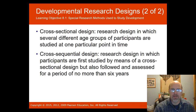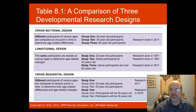Cross-sequential design has the best of both worlds — a cross-section of ages and a cross-section of time periods over a period of time. This allows for a comparison of the three types of research design: cross-sectional, longitudinal, and cross-sequential.